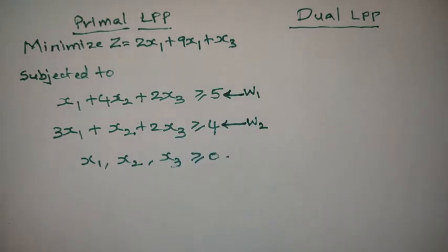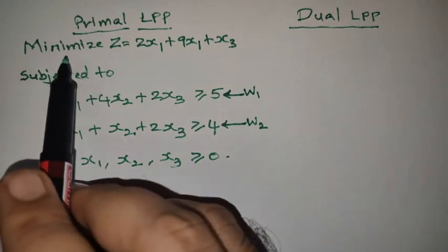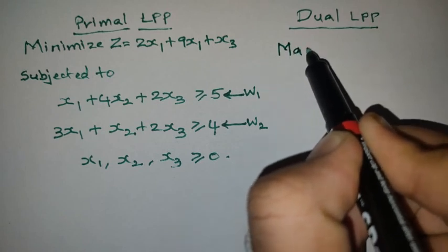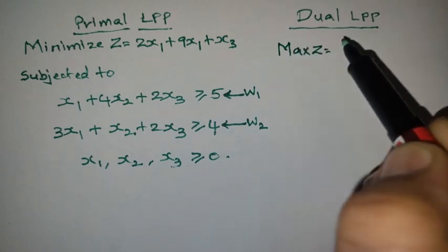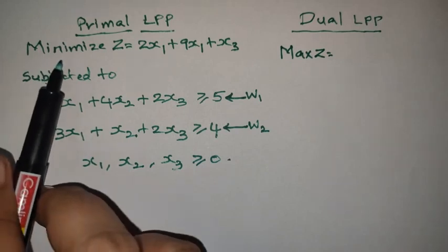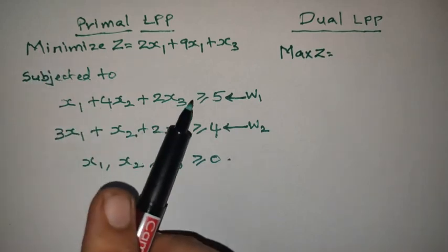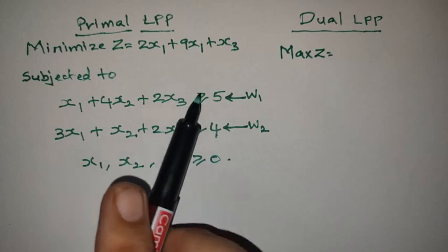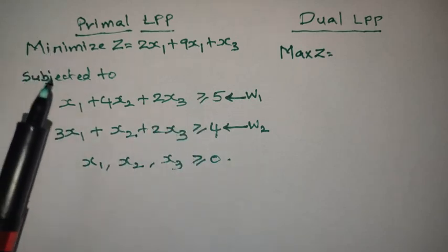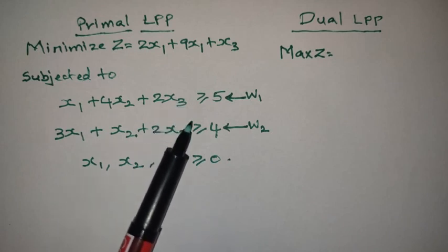Now I am writing the objective function. In the primal it is minimize Z, so in the dual it will be maximize Z. Before converting into dual LPP, we need to see that if the function is a minimization type, all constraints should be of greater than or equal to type.